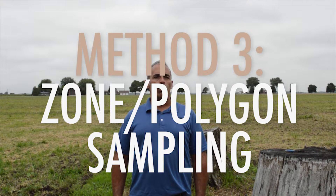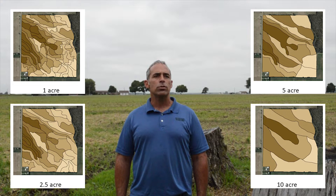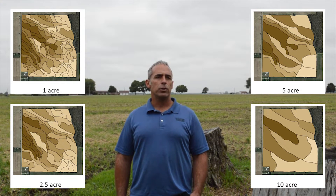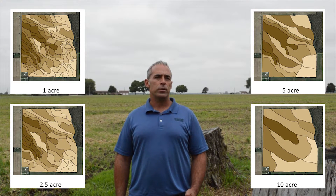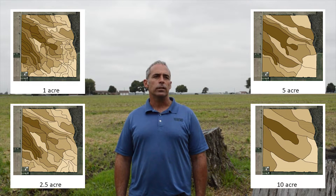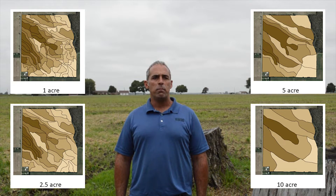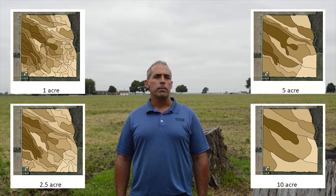The third method is zone or polygon sampling. Polygon sampling utilizes polygons or zones which are drawn to identify different soil types, different topographies, yield variability, drainage, fertilizer applications, and even the grower's knowledge of the field. This information is all used to create management zones within the field which are sampled and managed separately.